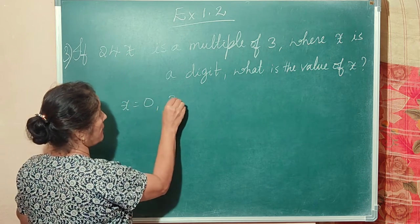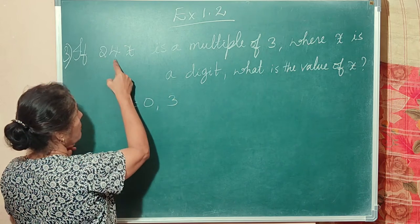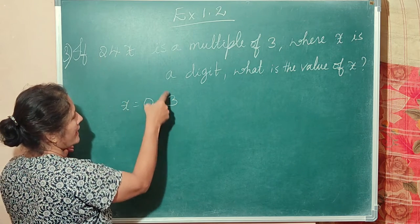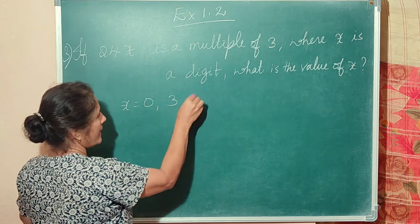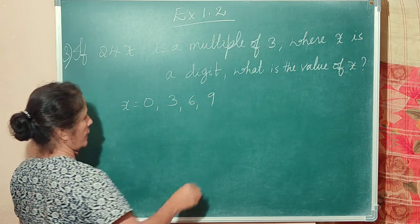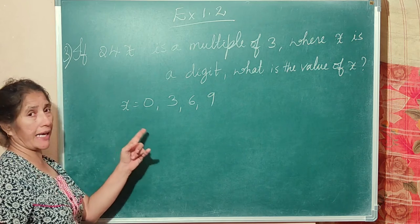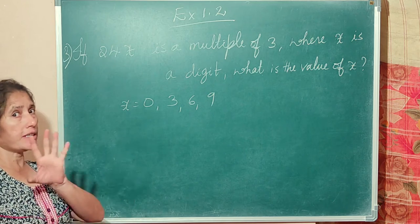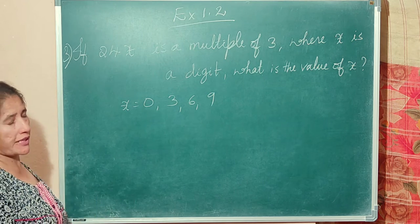x can be 3, because 6 plus 3 equals 9. It can be 6, it can be 9. So x can have four values: 0, 3, 6, or 9.